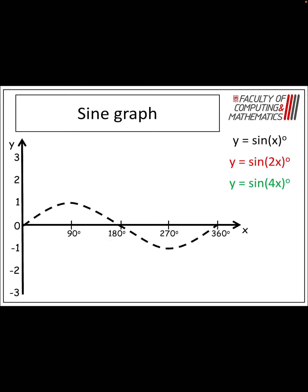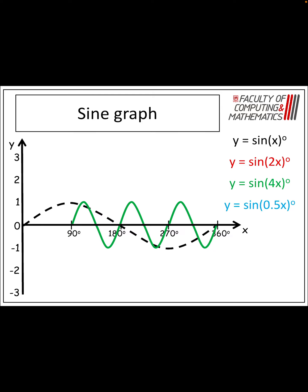For sine 4x, I take 360 and divide it by 4, so I want the first full cycle to happen between 0 and 90 degrees, and then I want it to repeat — and I should have four full cycles. For a half x, I only want to see half of the graph up to 360, so the full cycle should happen up to 720, but I only get half of the graph up to 360 degrees.